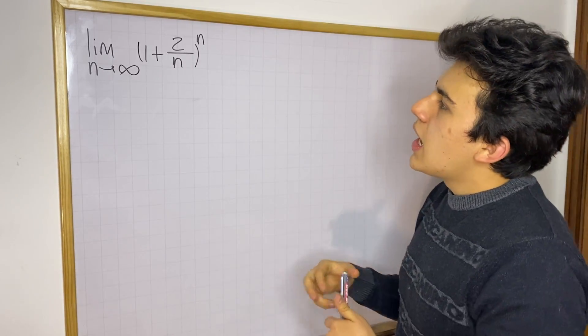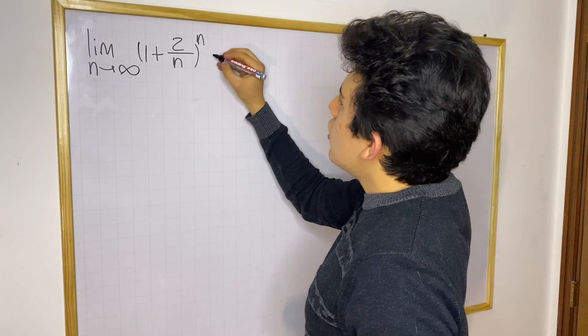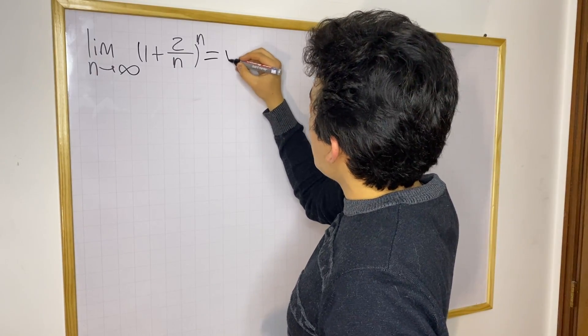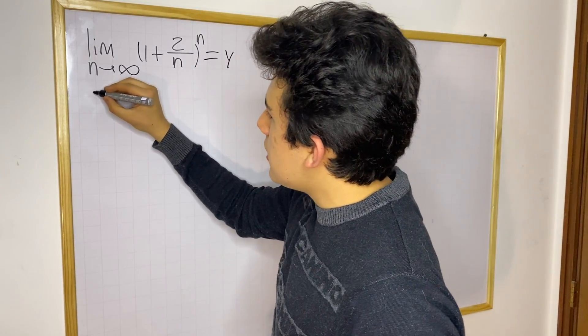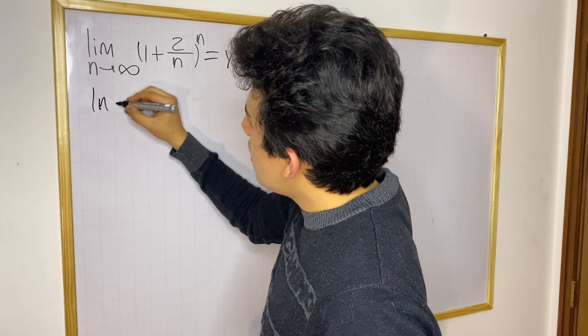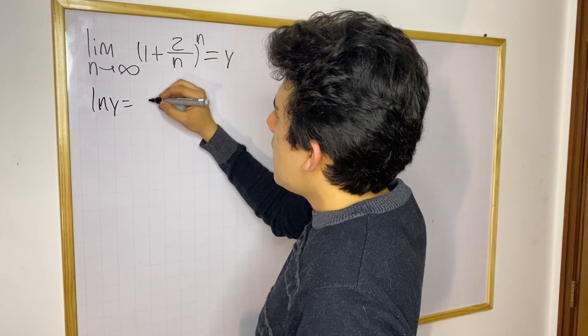So let's begin. I'm going to define this limit to be equal to Y, and now I'm going to take the natural log on both sides of this equation.